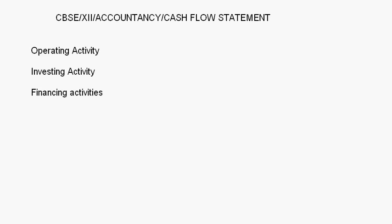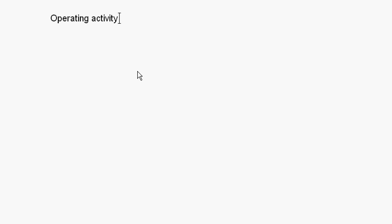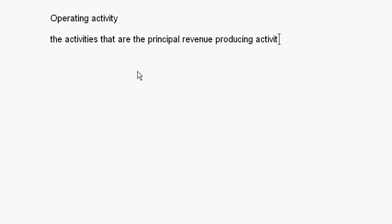Before taking up a question on how to calculate cash flow from operating activities, you should first know what an operating activity is and what items come under it. Operating activities are the principal revenue-producing activities of the enterprise — whatever is the main line of business of the firm, that is your operating activity.